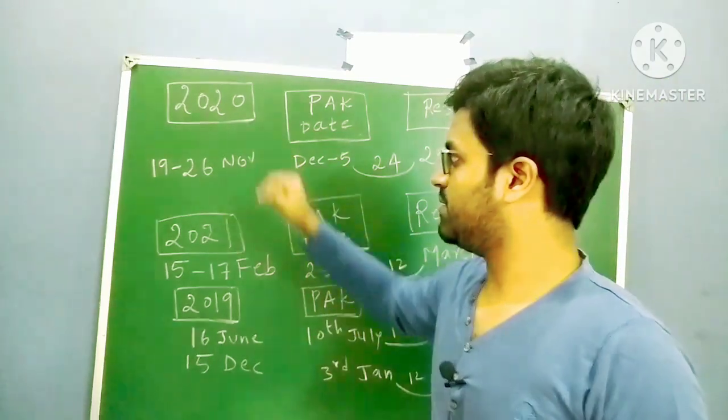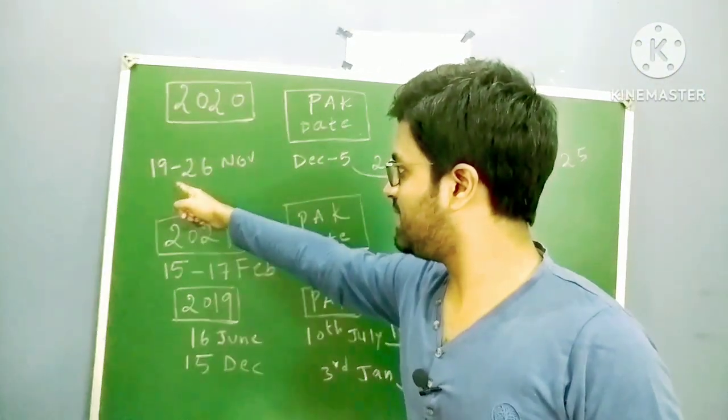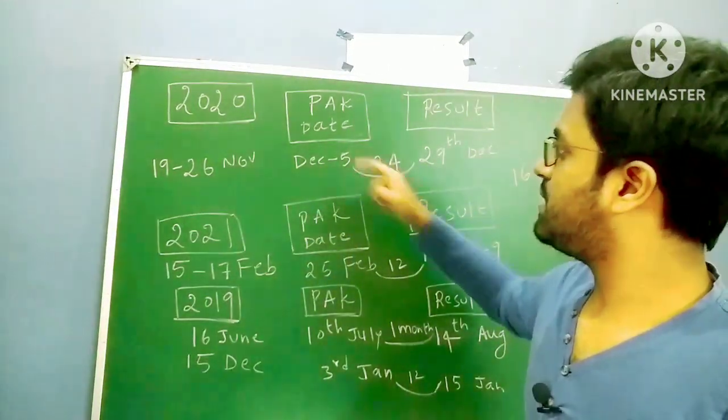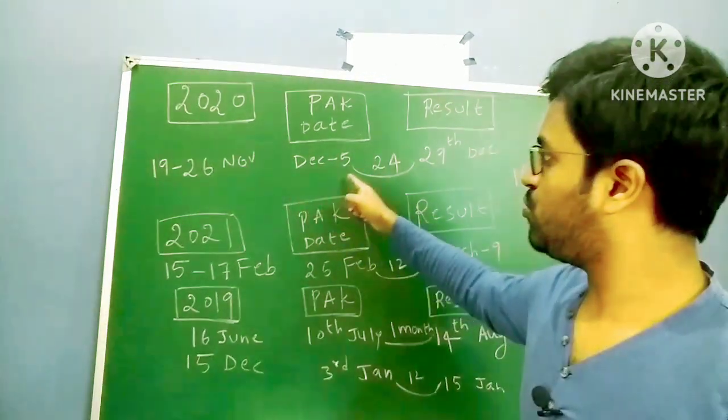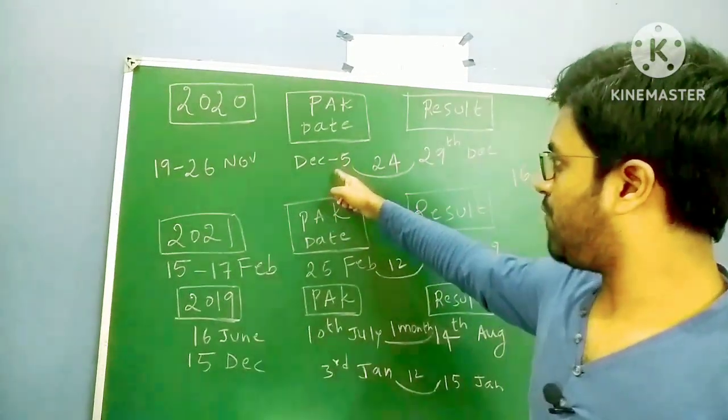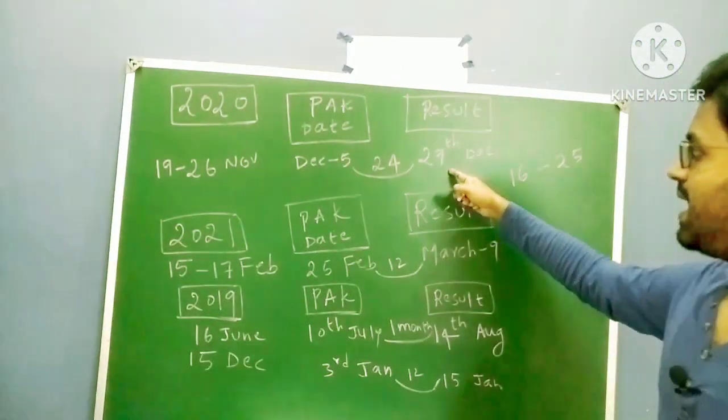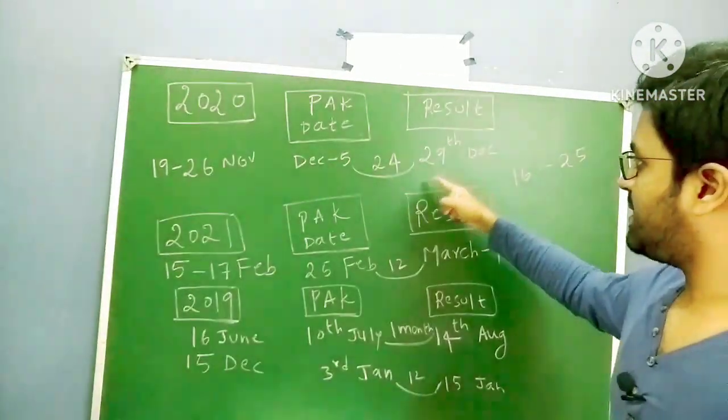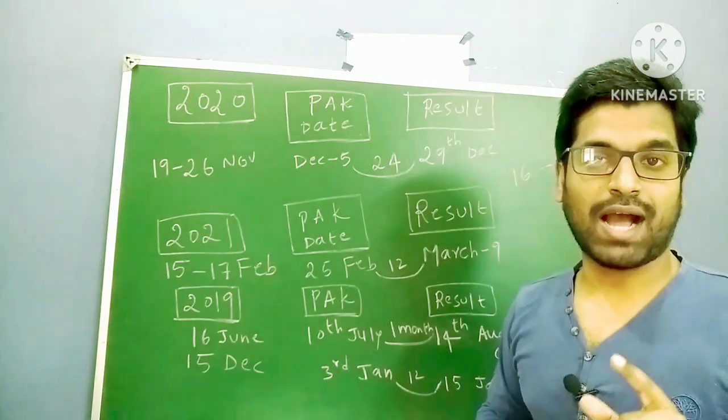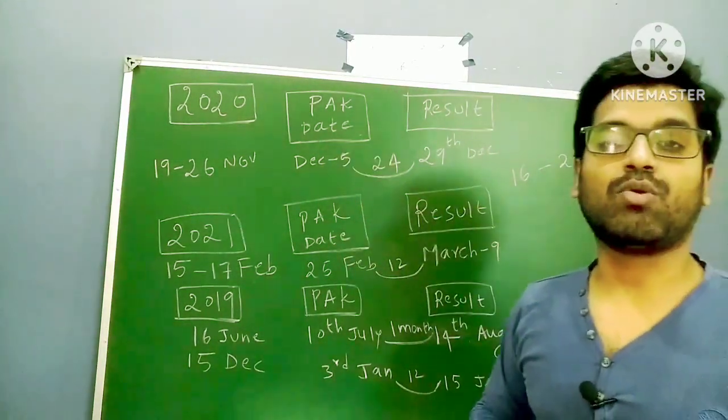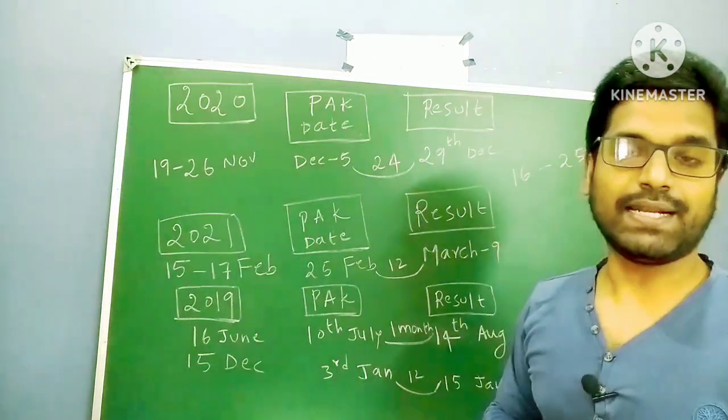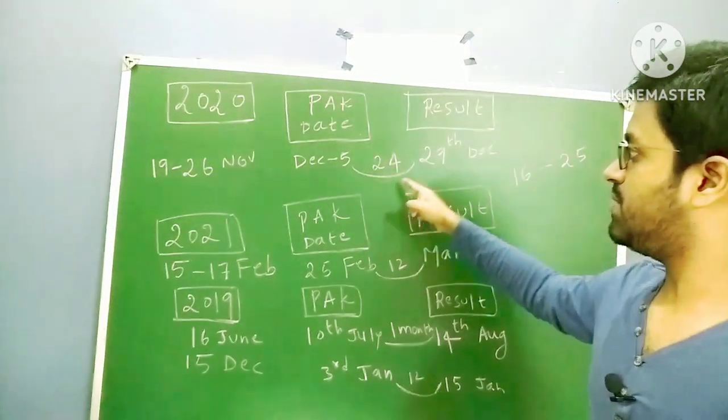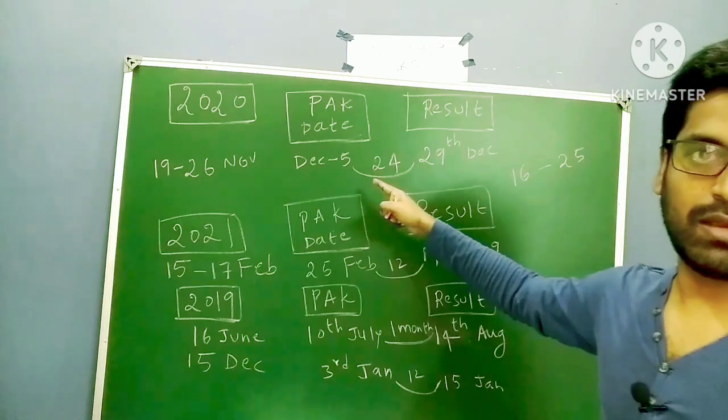If you observe 2020, the exam was conducted on 19th to 26th November. Provisional answer key date, the last date to challenge the questions was December 5th. After December 5th they provided the result on 29th December. If you observe the difference between December 5th and 29th, 24 days difference is there. But you have to remember one thing, 2020 was a Corona year, that's why they have taken this 24 days to provide the result.